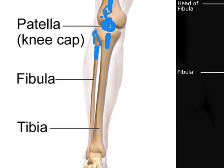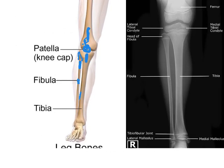The fibula is a bone you could actually live without. If you break it, it will hurt and need a splint, but it's no great loss — in fact, surgeons sometimes harvest a piece of fibula for bone grafts in more important bones because it's not essential. The main bone of the lower leg is the tibia; when you say you hit your shin, you're hitting your tibia.